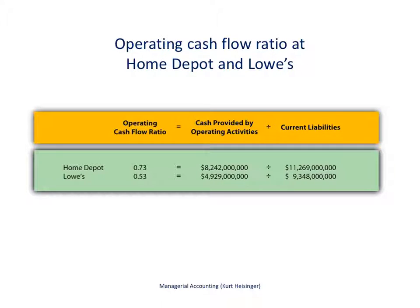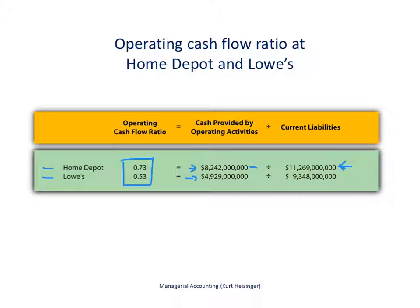Here is the operating cash flow ratio calculated for Home Depot and Lowe's, two companies in similar industries. For Home Depot, we take their cash provided by operating activities of $8,242,000,000 and divide by their current liabilities of $11,269,000,000, giving an operating cash flow ratio of 0.73. For Lowe's, the ratio is 0.53. Both ratios are below one, meaning neither company generates enough cash from operating activities to cover their current liabilities on the balance sheet.